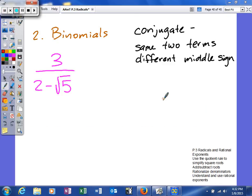What we're going to look at is how to rationalize the denominator when we have a binomial in the denominator. Any time you're going to do that, you're going to do the same thing every single time. We're going to multiply by the conjugate. And what the conjugate means is it's the same two terms, just a different middle sign.